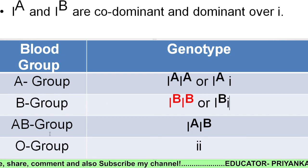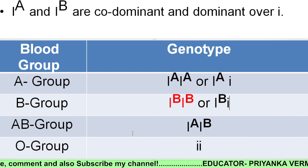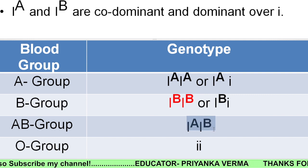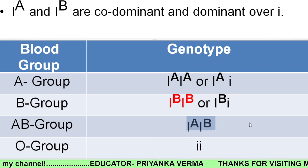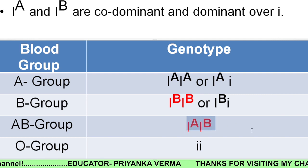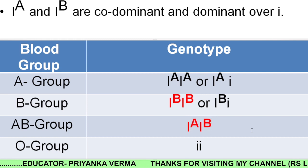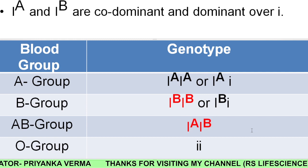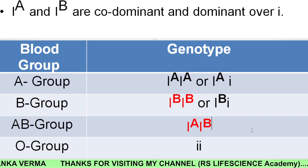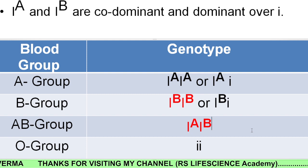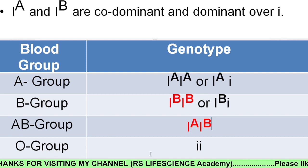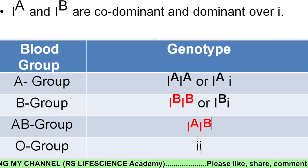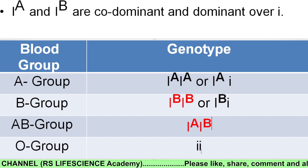If someone's blood group is AB, then the only possible genotype is IᴬIᴮ, because Iᴬ and Iᴮ are both dominant. This is why AB blood group is the best example of co-dominance. If someone's blood group is O, then definitely the only genotype is small i, small i (ii).